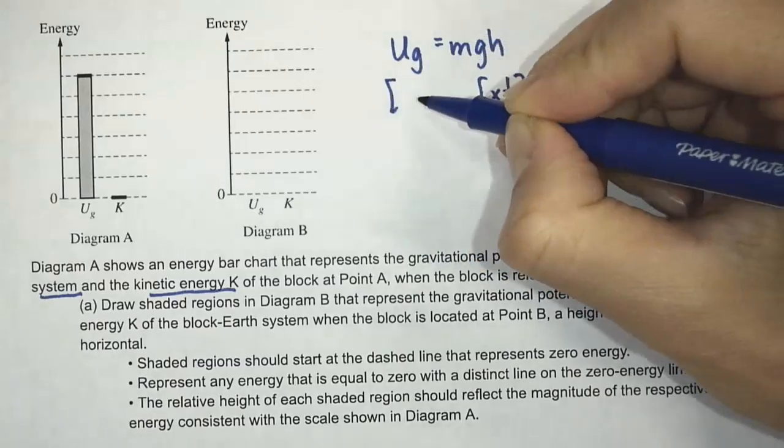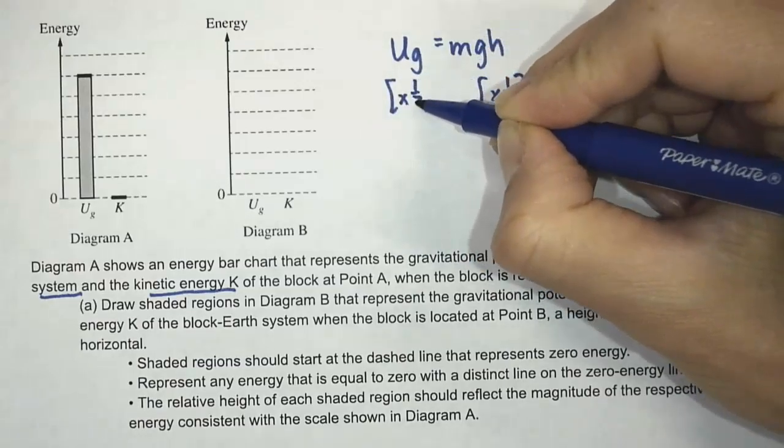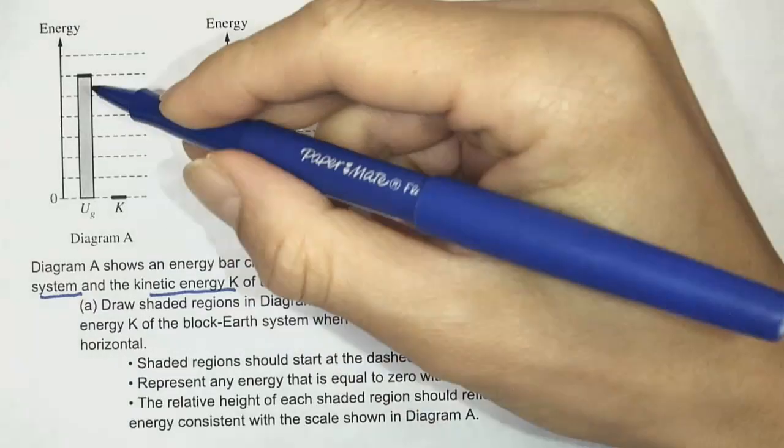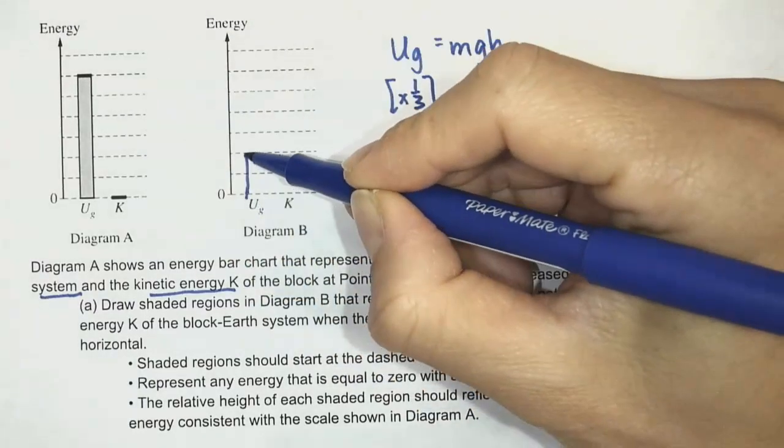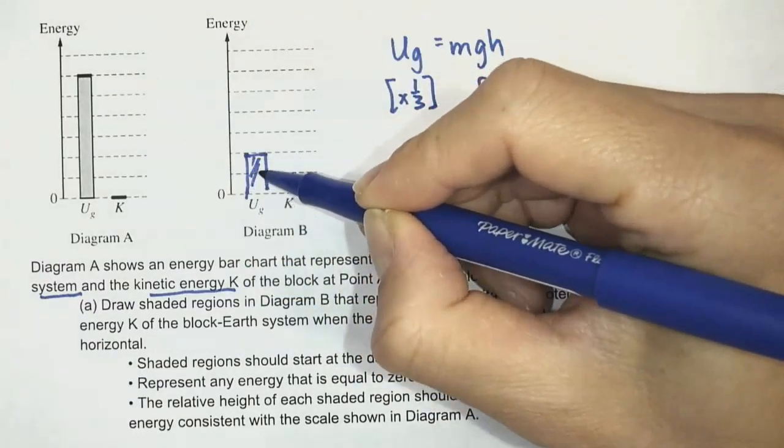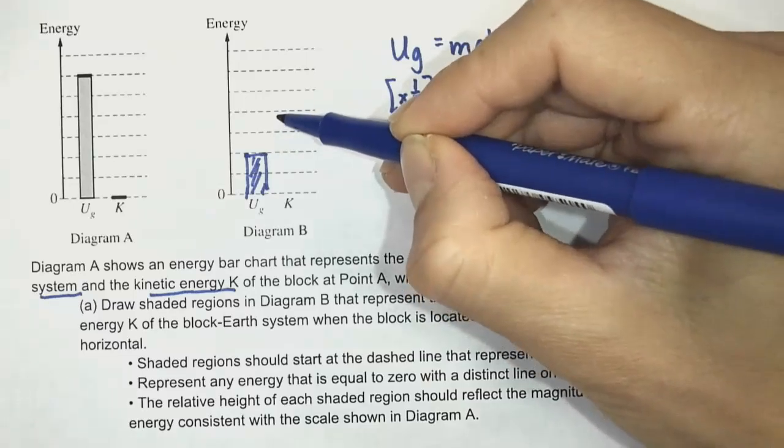So therefore the potential energy will be one third. So one third of six is two. So I'm going to put two boxes here, shade that in there. And then this is going to be four.